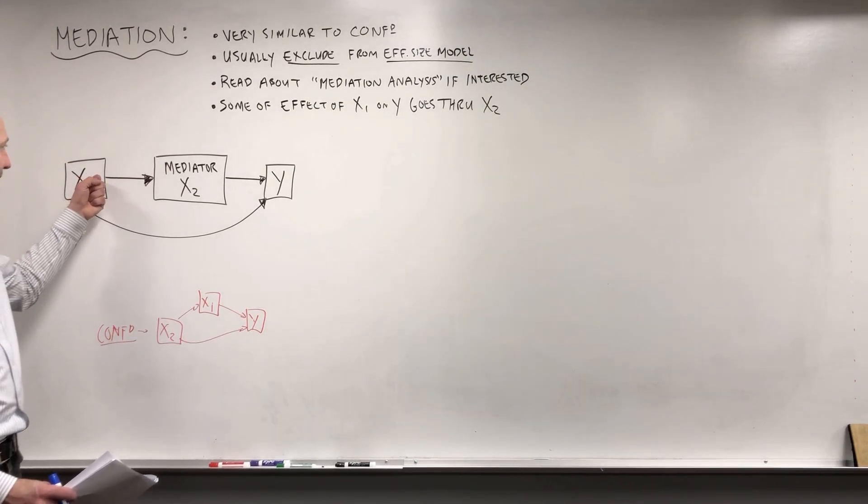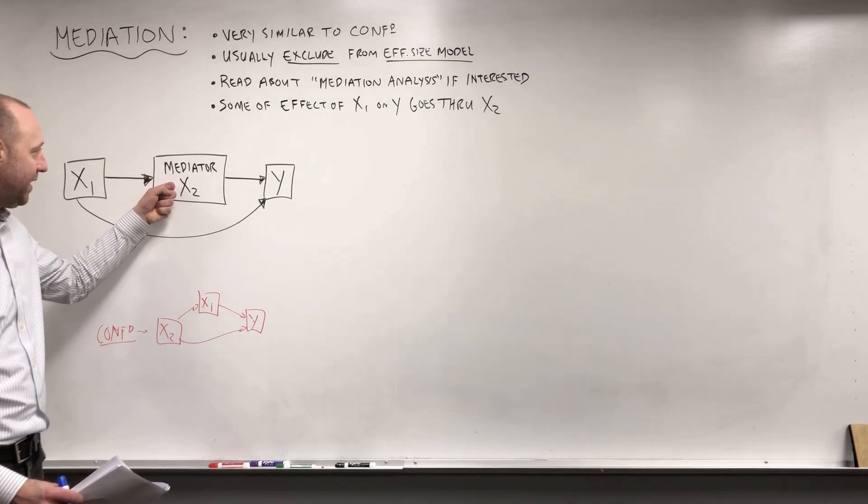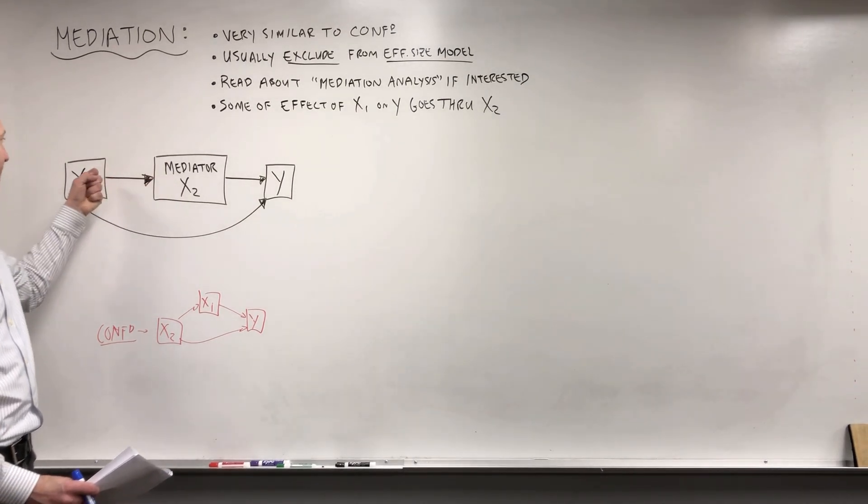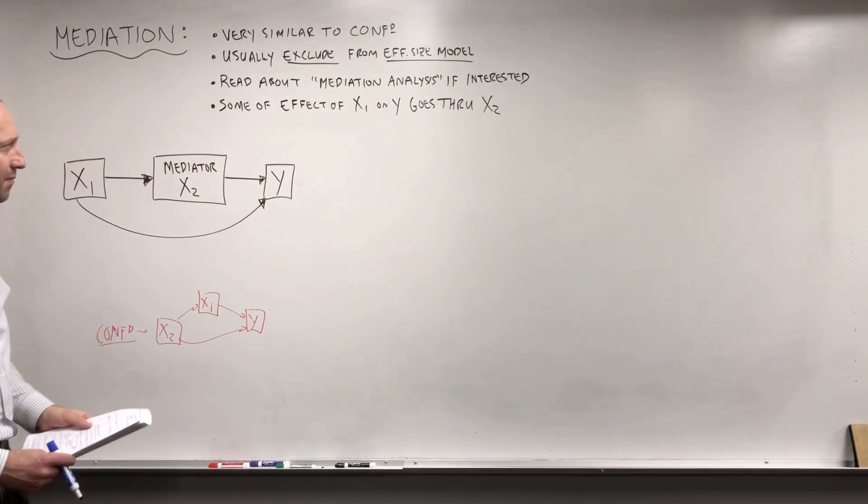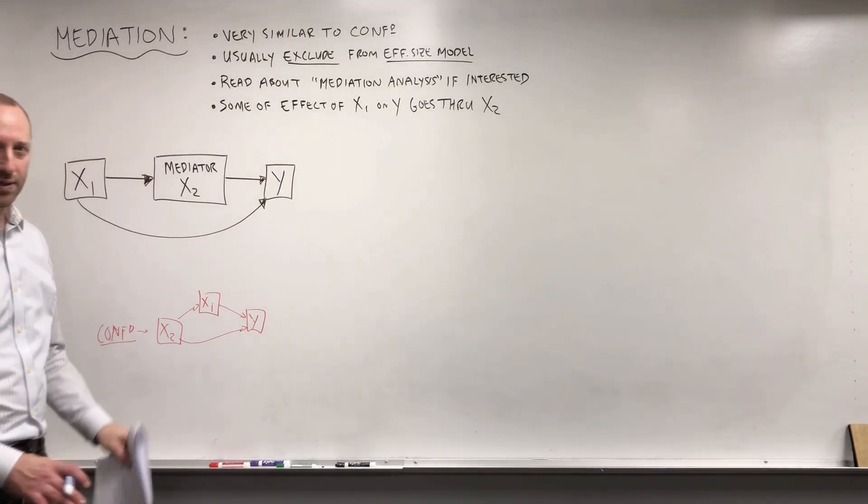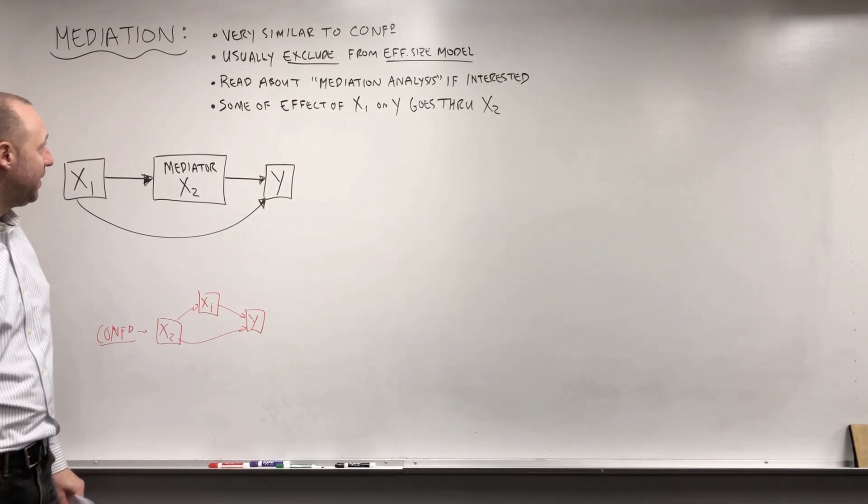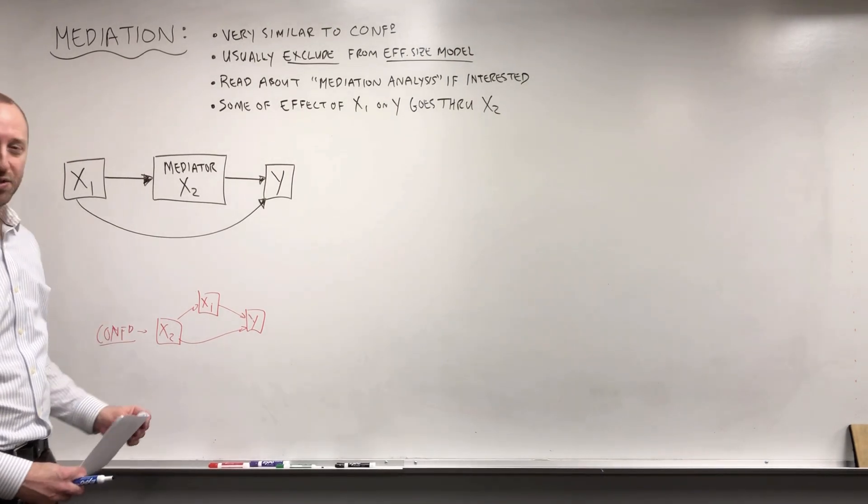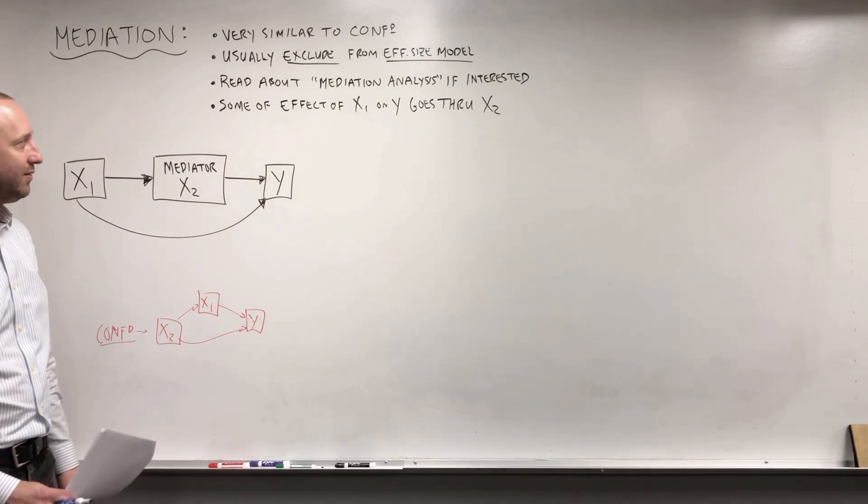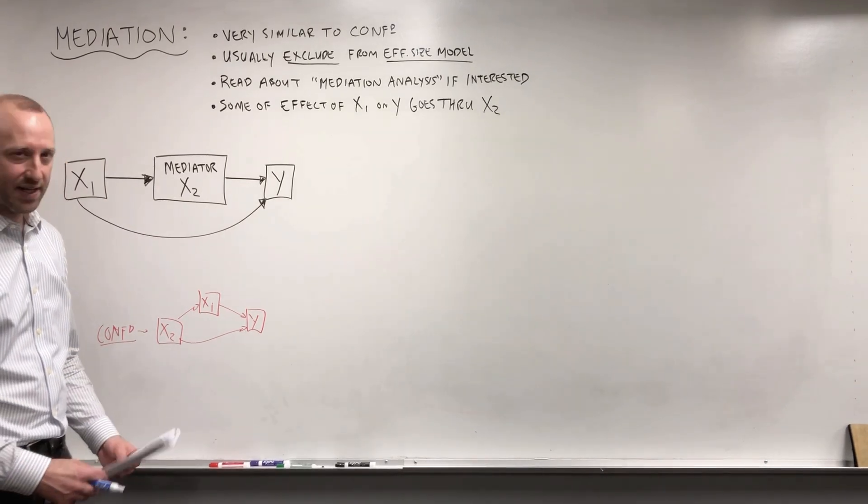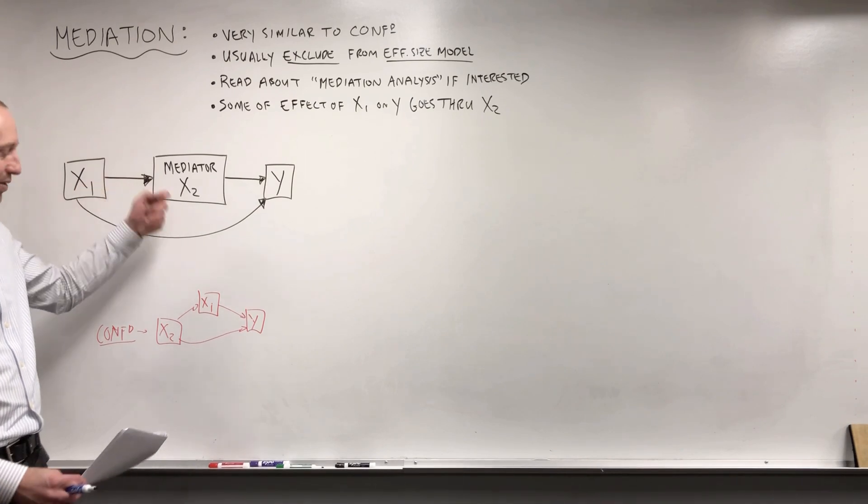Here, we're looking at x2, the mediator, sitting in the middle. x2 is sitting between x1 and the outcome. In every other way, mediators are going to behave numerically the same as confounders in models. So the real way to identify a mediator is through our conceptual understanding of the association between x1 and x2.